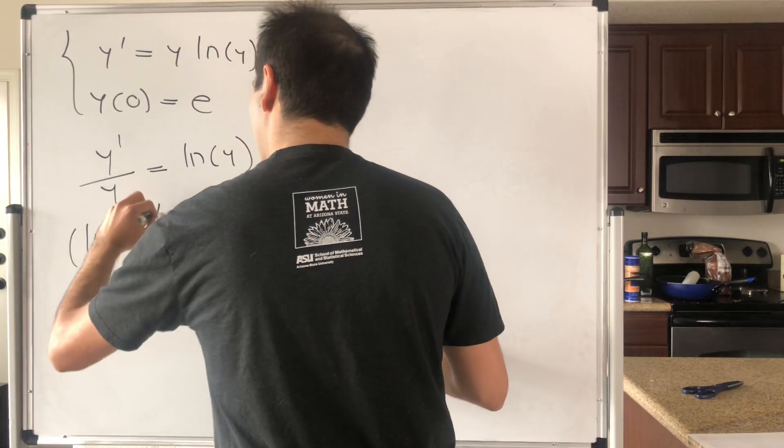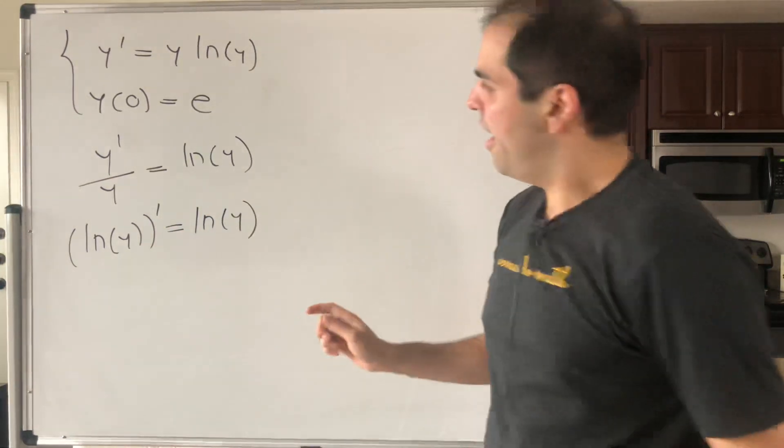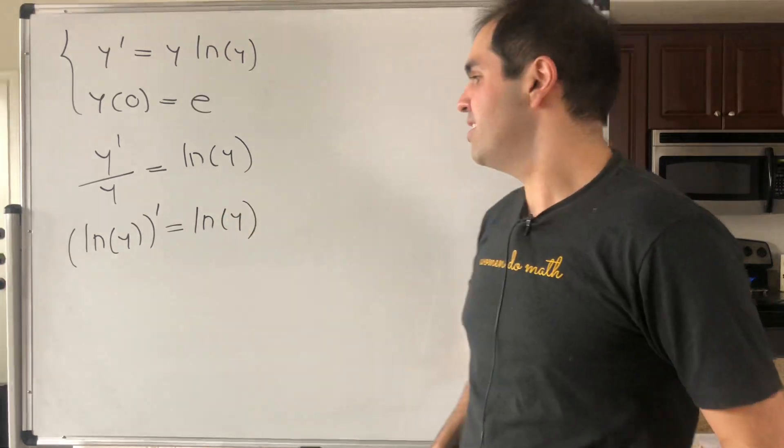So in other words, ln(y) prime equals ln(y). And by the way, no absolute value because y is positive here.